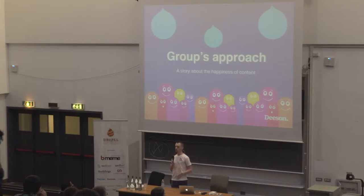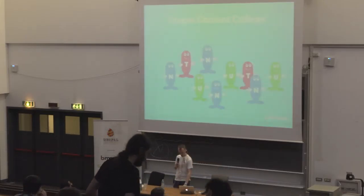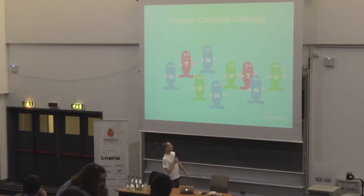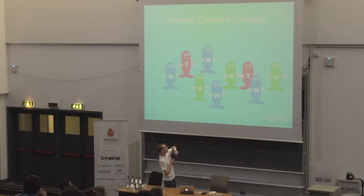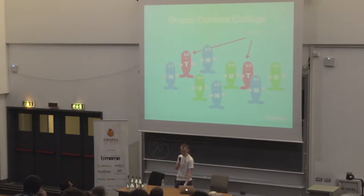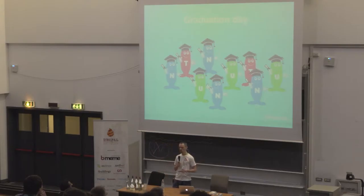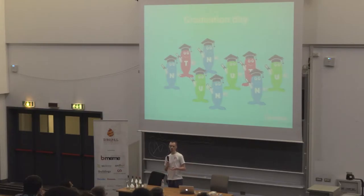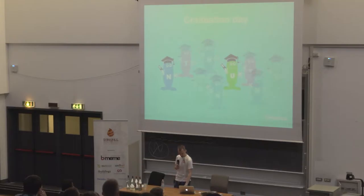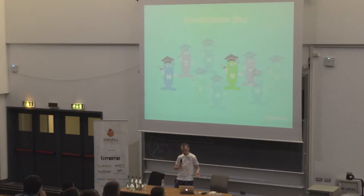So what's Group's approach? It's actually a story about the happiness of contents. At Decent, we have these little guys called Flurps and they all go to the Drupal Content College. By their shirts, some are studying to become nodes, some to become users, and others want to become taxonomy terms. Come graduation day, they're all really excited. They want to go to websites and get jobs as users, nodes, or taxonomy terms. And most of them actually do — websites hire them for what they were trained to be.